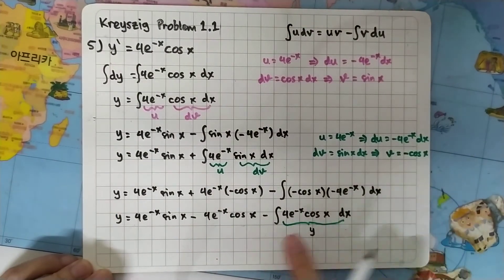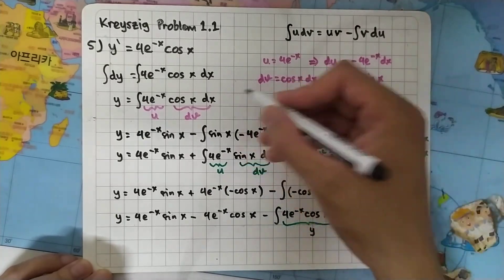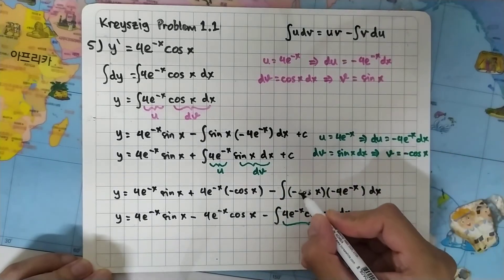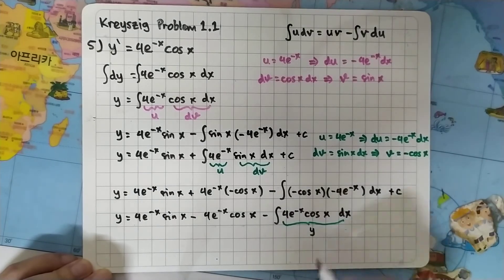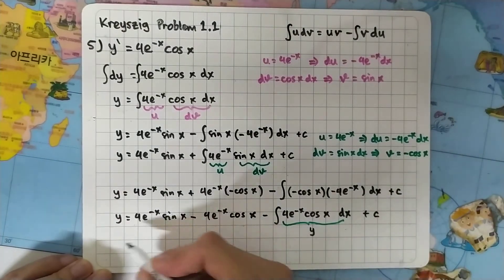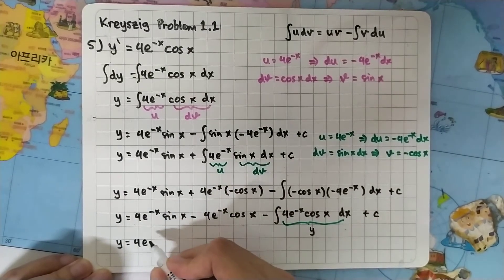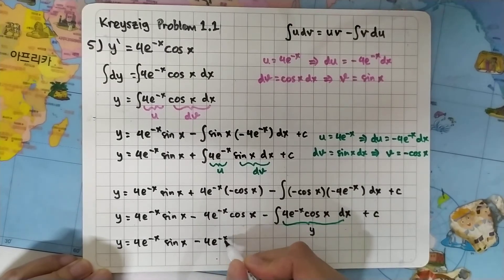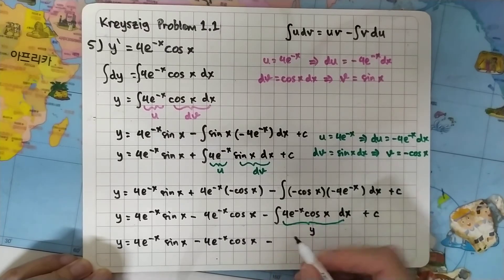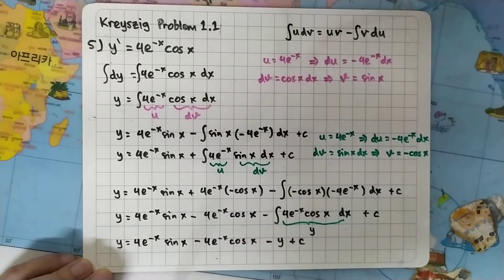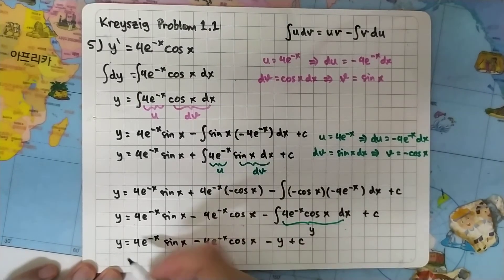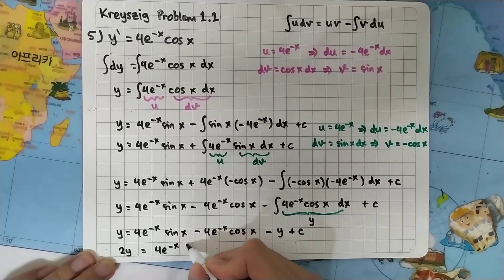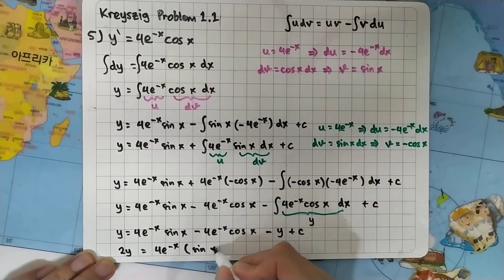Remembering to add the constant of integration, we can rewrite the equation as: y equals 4 e to the minus x sin x minus 4 e to the minus x cos x minus y plus constant. Moving the y to the left hand side gives 2y equals 4 e to the minus x times the quantity sin x minus cos x, plus constant c.